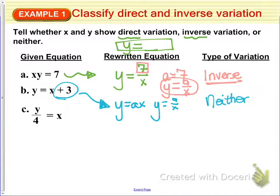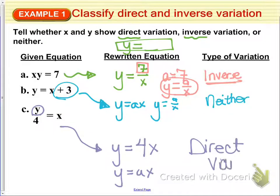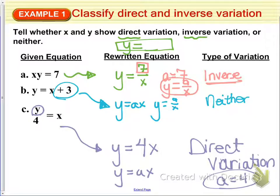Part C: we need to get y by itself first. The rewritten equation is y equals 4x. This is in the form y equals ax, so this is direct variation. The a value on this one is 4.